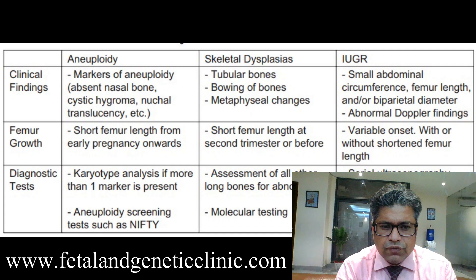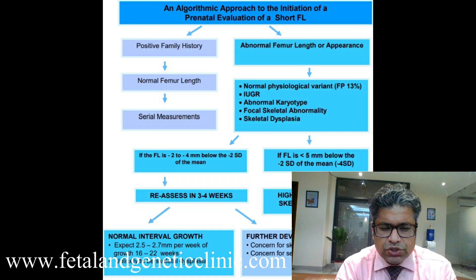For aneuploidy, we try to look for other markers. For skeletal dysplasia, we try to measure other bones. For IUGR, we try to see the dopplers. We do have a nomogram and a protocol for how we follow these cases up.